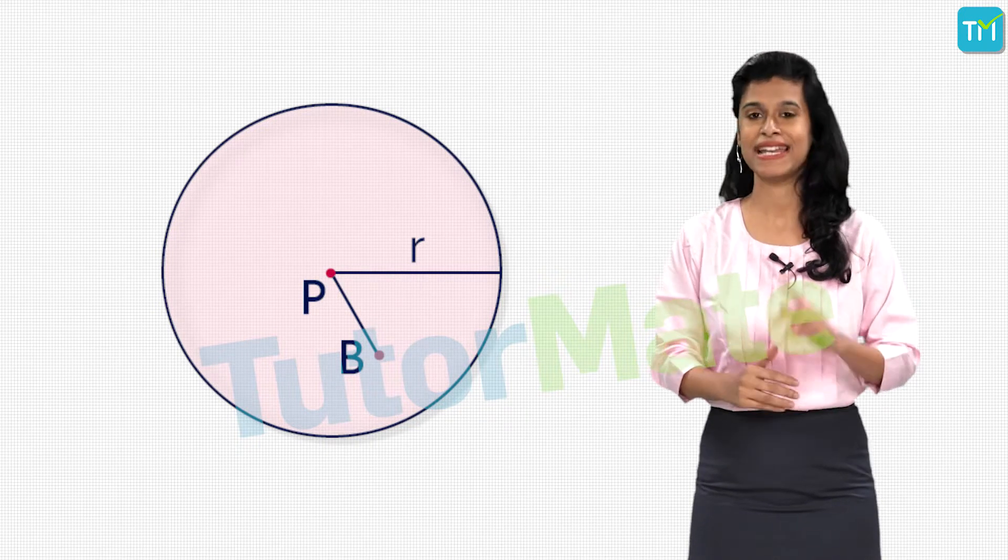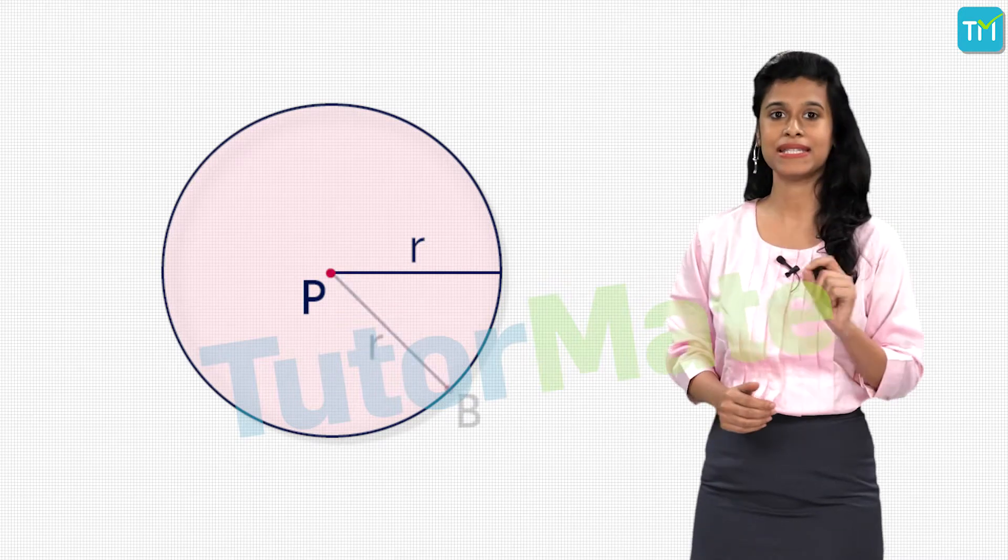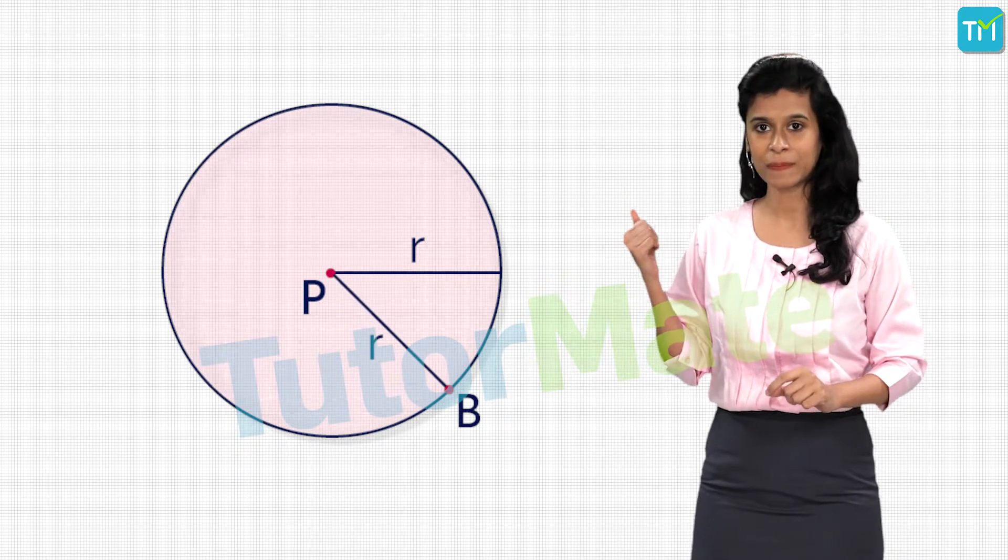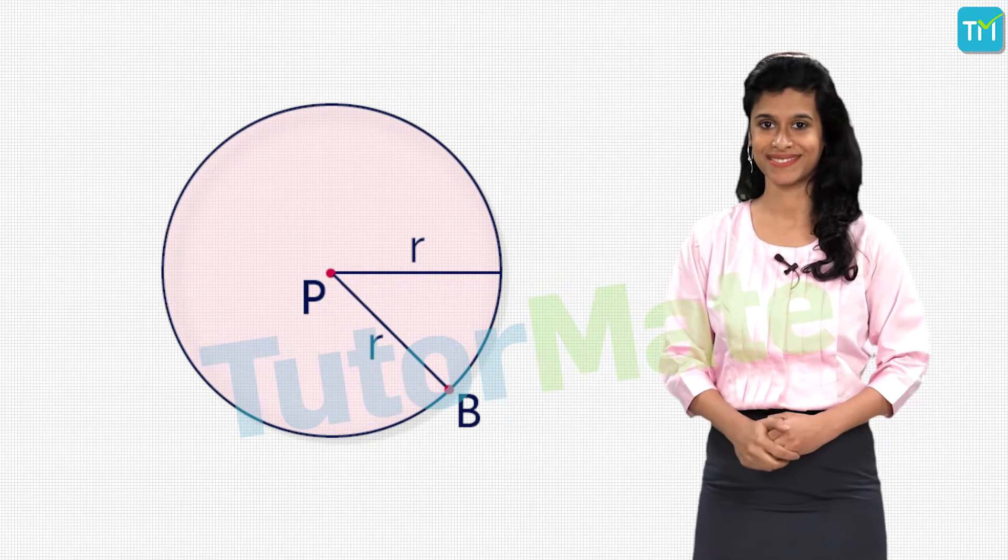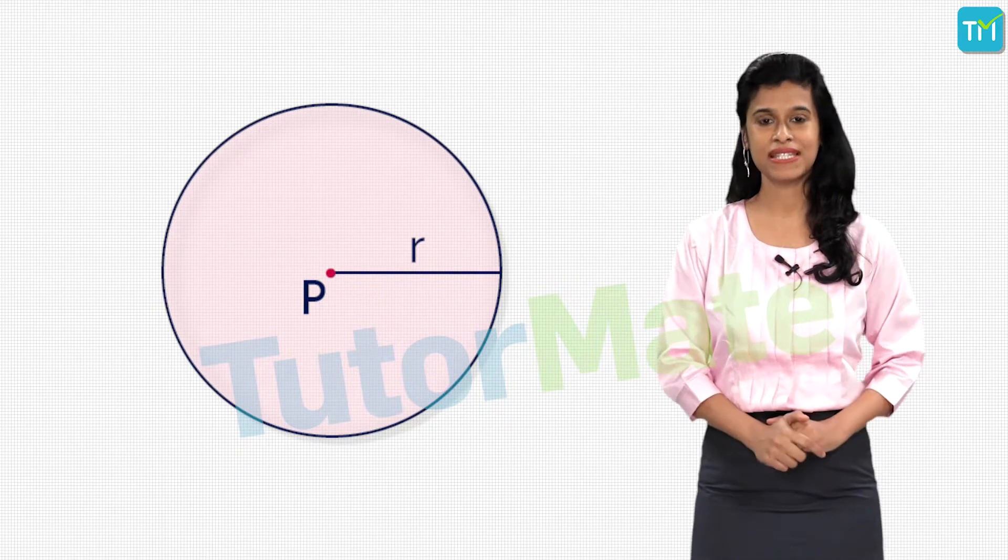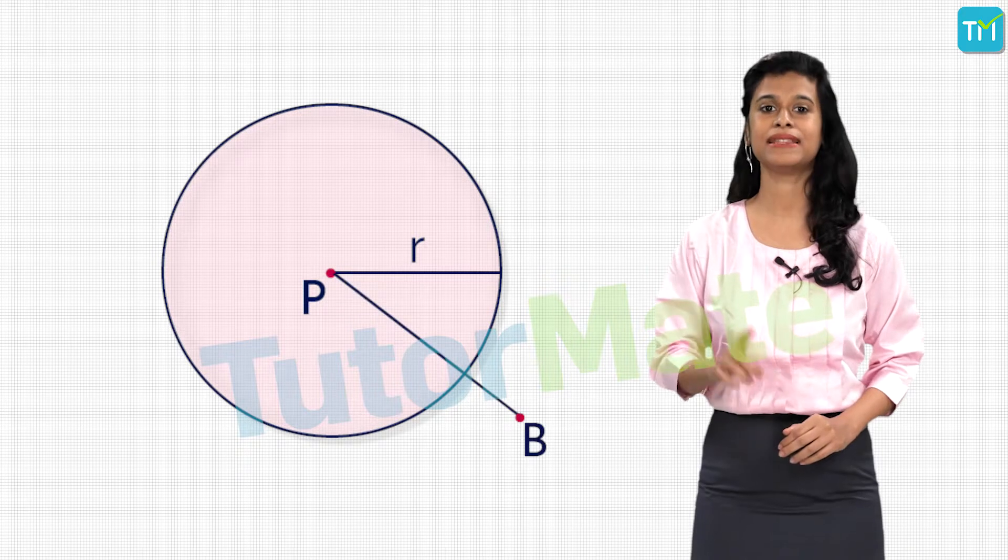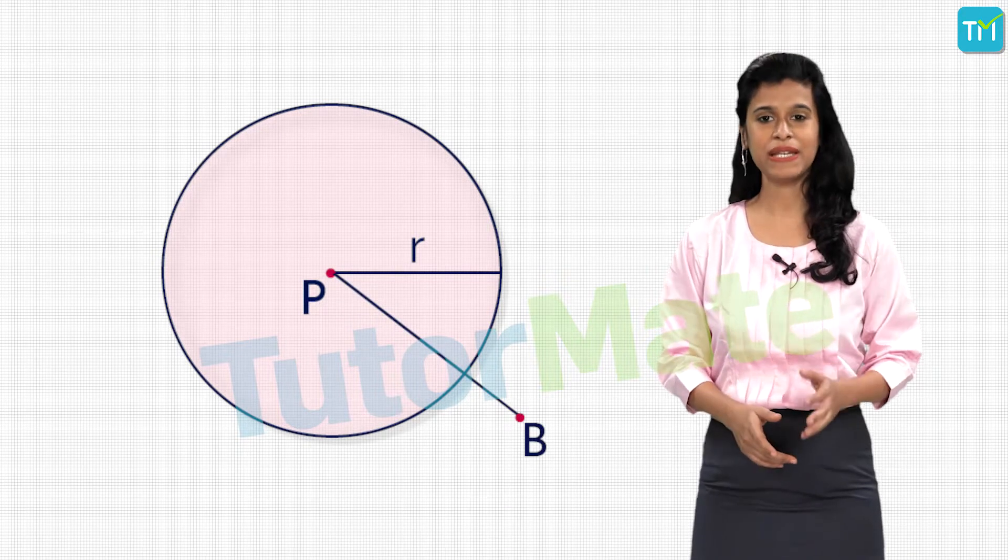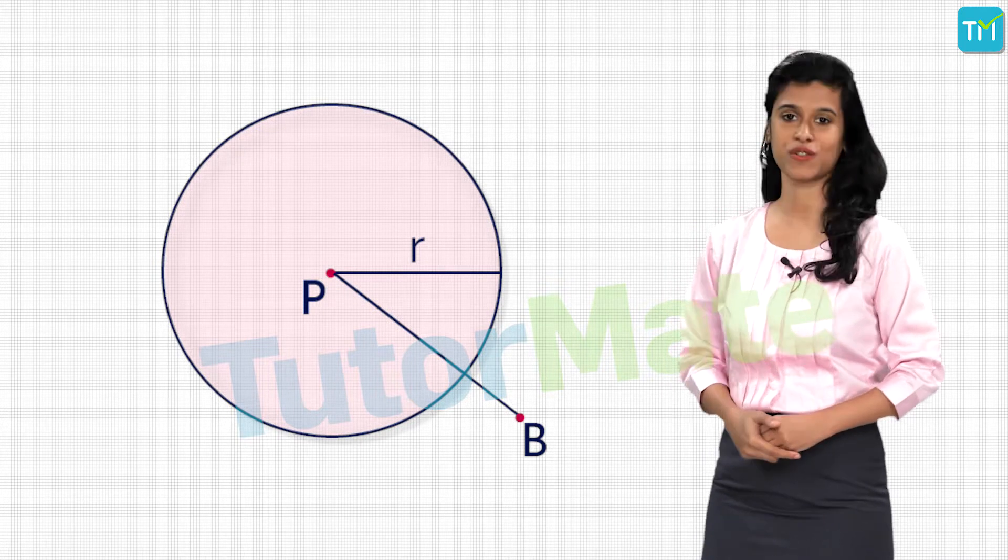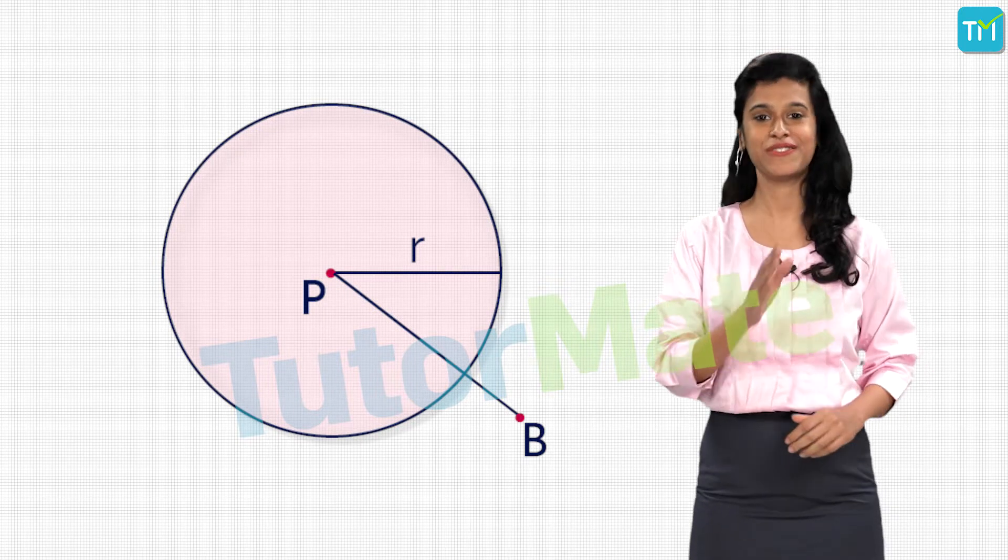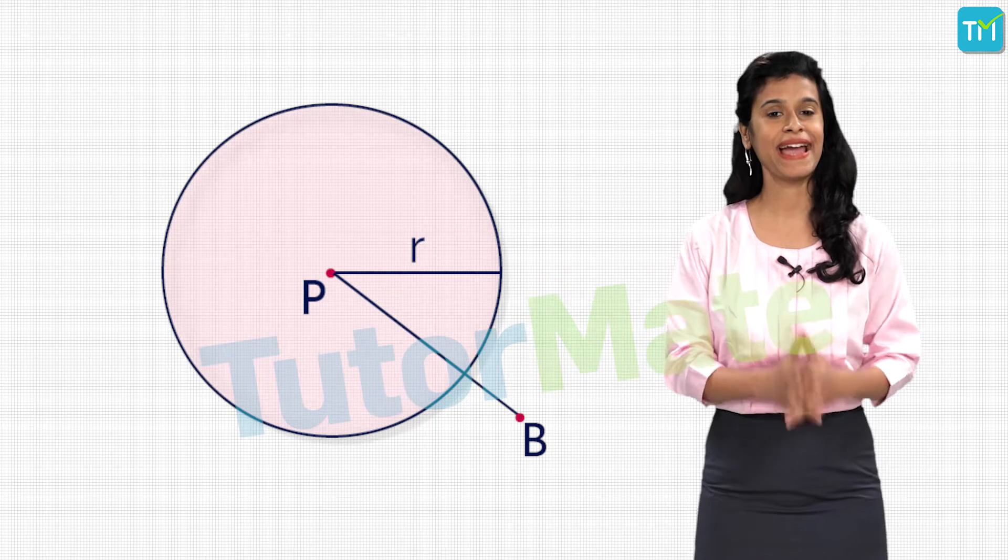Next, if the distance PB is equal to the radius r, then B will lie outside the circle, that is in the exterior of the circle. So now you know the three positions a point can have with respect to a circle in a plane.